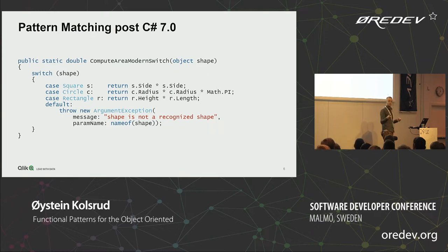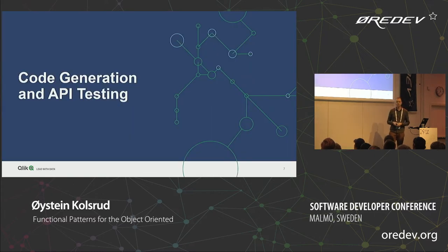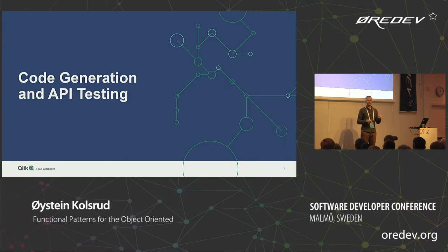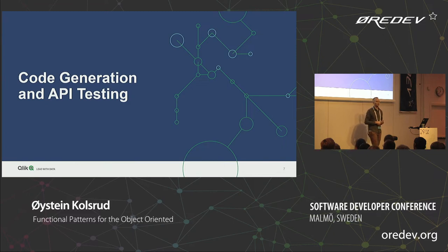It's a very convenient thing, and it has been in Haskell for a long time. Coming into this, it's not just syntactic sugar — it actually enables some nice programming techniques. The main problem domain we'll be talking about is code generation and API testing. I've been involved in a number of projects doing code generation, both at Qlik using C# and in other companies using Haskell. At Qlik I've been using it to generate a .NET SDK.